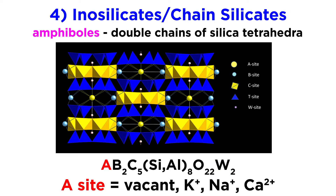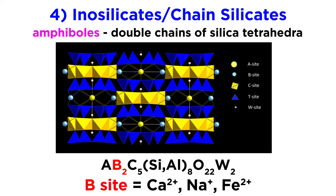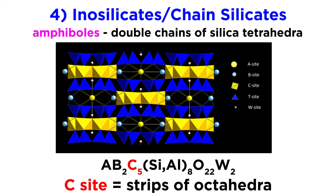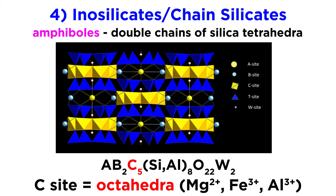The A site can either be vacant, or contain the large cations potassium, sodium, and/or calcium. The B site contains medium-large cations such as calcium, sodium, and ferrous iron. The C site is composed of strips of octahedra that are sandwiched between the chains of tetrahedra, gluing them together. The octahedra are occupied by the medium-sized cations magnesium, iron, and aluminum.